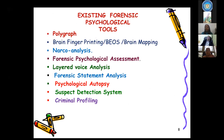The existing forensic psychology tools include: polygraph, brain fingerprinting, brain mapping, narco analysis, forensic psychological assessment, layered voice analysis, forensic statement analysis, psychological autopsy, suspect detection system, and criminal profiling.